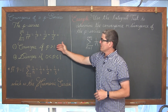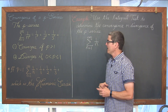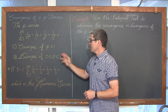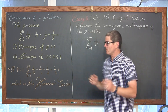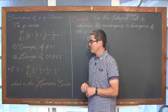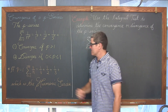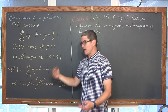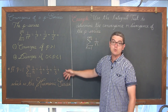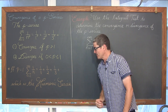This p-series converges if p is greater than 1, and it diverges if p is greater than 0 but less than or equal to 1. Mentioning the fact that our power could be a constant value of 1 means that if p is equal to 1, we have the series of 1 over n — that is, 1 over 1 plus 1 over 2 plus 1 over 3 plus 1 over 4, and so on — which is called the harmonic series.